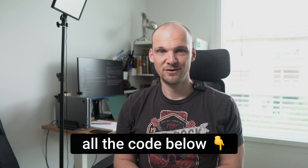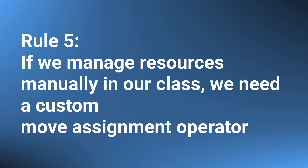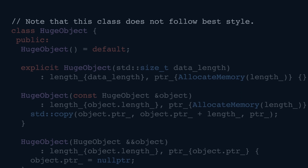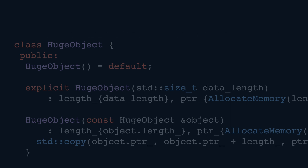Remember how once we had a copy constructor we also needed a copy assignment operator? The same story repeats here. I'd like to leave the implementation of a move assignment operator to you as a small homework — I'm sure you can piece it together from this and the move semantics video. The full code is in the script to this video, as always. Once you are done with that, you will know the last rule: if we manage resources manually in our class, we need a custom move assignment operator. After implementing it, we can finally remove the annoying comment at the top.